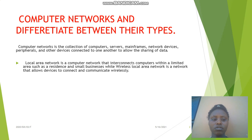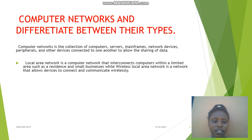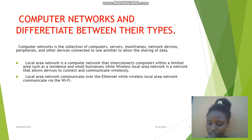Differences of computer networks: Local area network is a computer network that interconnects computers within a limited area such as a residence and small businesses. While wireless local area network is a network that allows devices to connect and communicate wirelessly. Local area network communicates over the Ethernet while wireless local area network communicates via Wi-Fi.